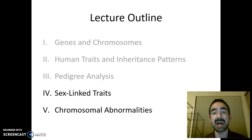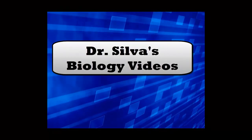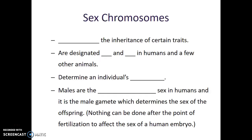In this video we're going to talk about what happens when disease alleles are found on the X chromosome and how that affects patterns of inheritance. So what happens when disease genes are found on the sex chromosomes? Well it turns out that the patterns of inheritance will be a little different for those traits compared to genes that are on the autosomes.